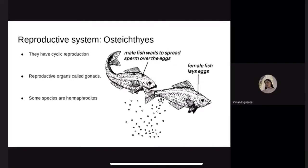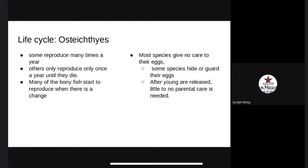The reproductive system. Osteichthyes have cyclic reproduction with a certain duration to their cycles called spawning — some cycles are as short as four weeks, others as long as years. Some species are hermaphrodites. The eggs of bony fish are usually left in the water to be fertilized by sperm. The reproductive organs are called gonads — females have two ovaries that produce eggs and males have two testes that produce sperm. They reproduce by external fertilization, releasing eggs and sperm into the water. Some reproduce many times a year and others only once a year. Many begin to reproduce when there is a change in photoperiod or temperature. Most species give no care to their eggs, and some hide or guard them, with little to no parental care after young are released.